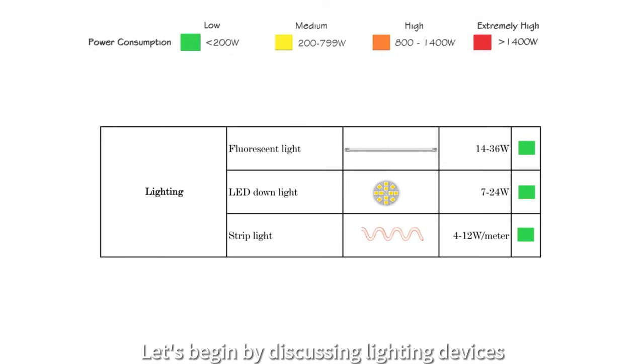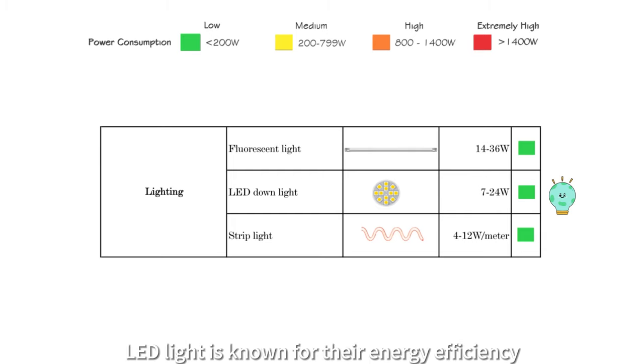Let us begin by discussing lighting devices, which include fluorescent light, LED down light, and strip light. LED lights are known for their energy efficiency and consume less power than fluorescent light to produce the same level of brightness.